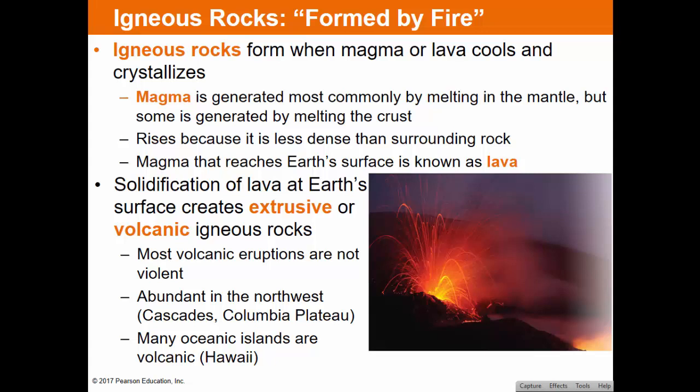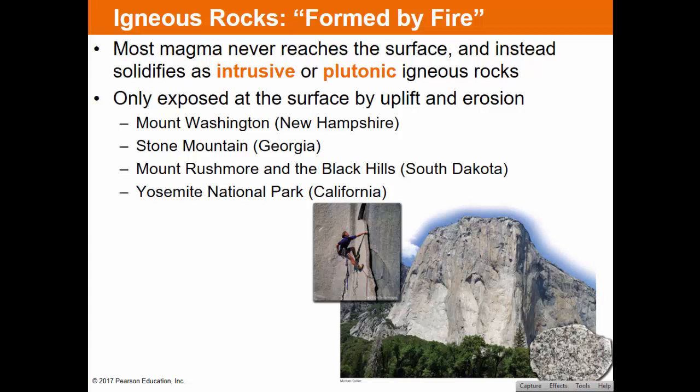Most volcanic eruptions are actually not violent. There are many eruptions in the ocean — under the seafloor or at the surface — that are very mellow basaltic eruptions. Some eruptions, however, are quite violent. Different types of magma create different types of volcanic eruptions. Most magma never reaches the surface — it solidifies beneath as intrusive or plutonic igneous rocks. Those rocks are only exposed at the surface if they're uplifted or overlying material is eroded away.